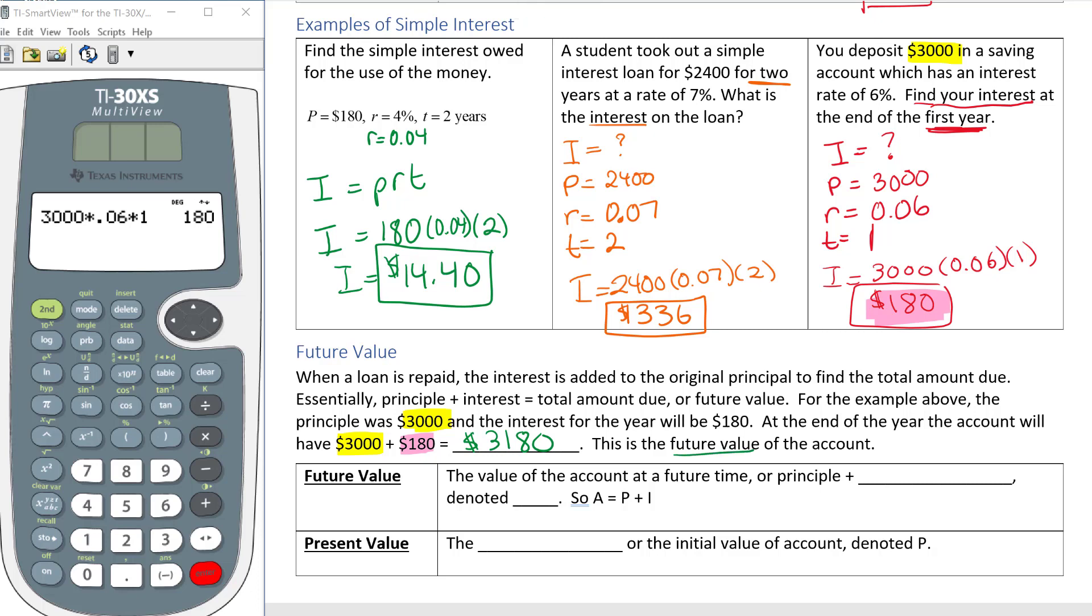If I had deposited $3,000 today, I know at the end of my first year I'm going to have $3,180 due to the added interest. So that's what future value means. It means what's going to happen after I get my interest or what do I owe after I'm paying my interest.